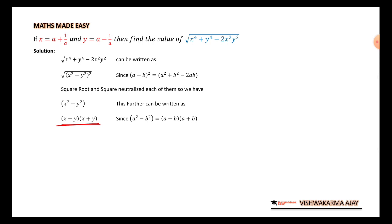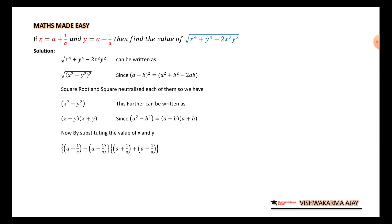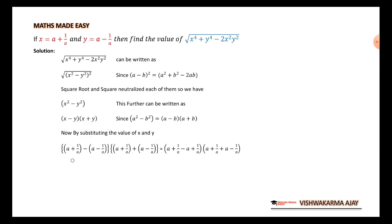Now we substitute the values. x is equal to a plus 1 upon a, and y is equal to a minus 1 upon a. For the first bracket, x minus y gives us a plus 1 upon a, minus a minus 1 upon a. For the second bracket, x plus y gives us a plus 1 upon a, plus a minus 1 upon a.